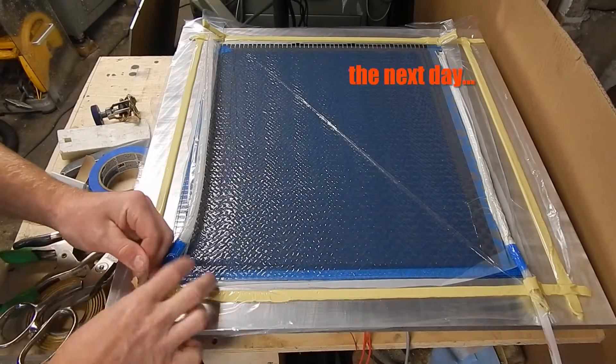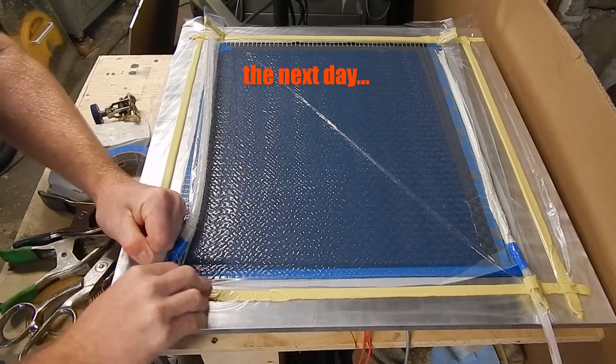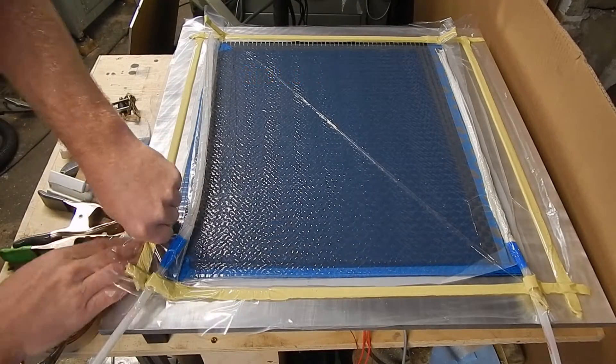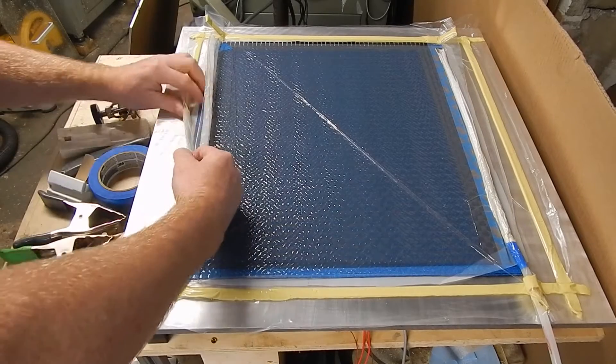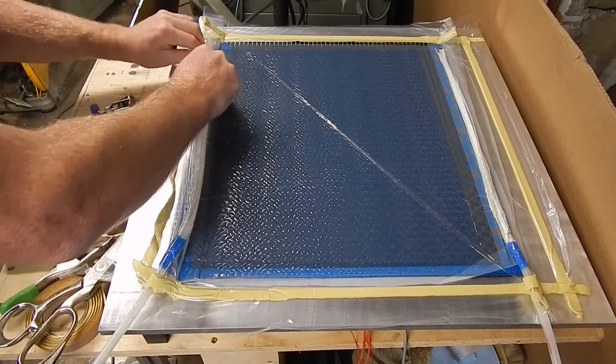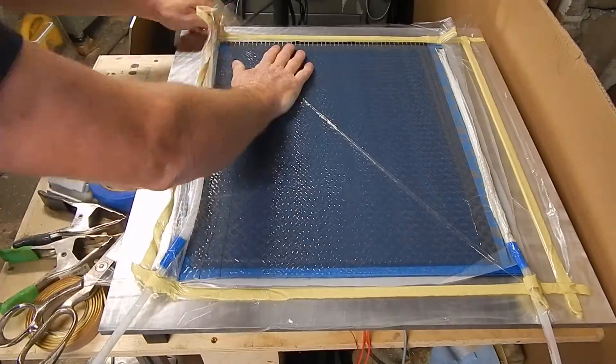So the next day I came back and demolded this. It looked like the sealant tape stuck very nicely around the perimeter. There was no resin flash.